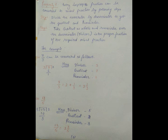Let us take one more example: thirteen by five. When thirteen is divided by five, we get quotient two and remainder three. So thirteen by five can be written as two and three by five.